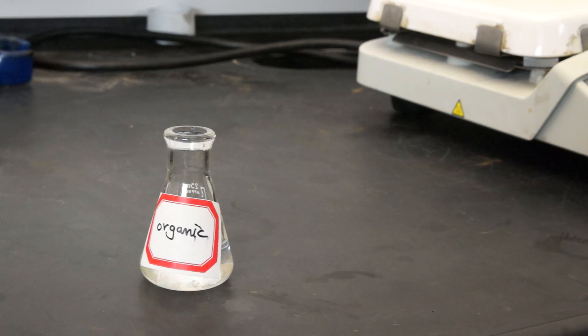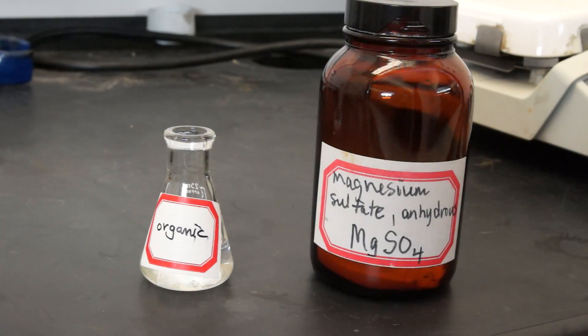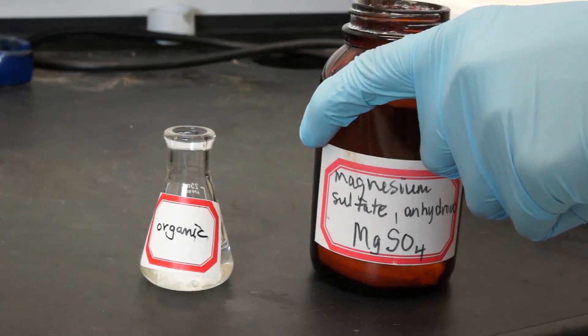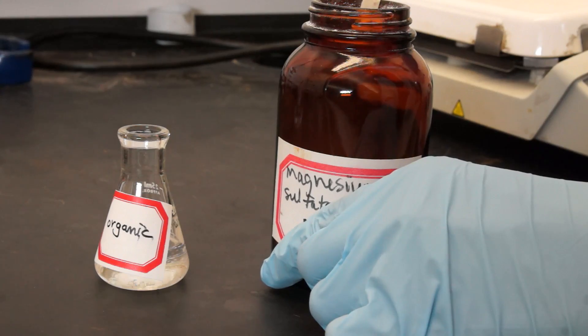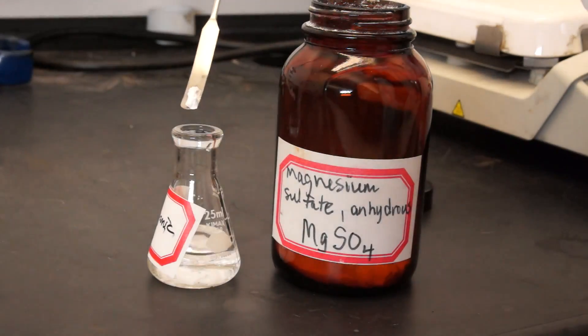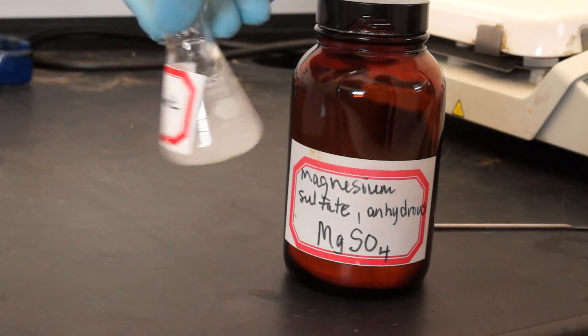To dry our organic layers from extraction, we can use anhydrous magnesium sulfate. Take a little bit of the magnesium sulfate and add it to your organic layer.